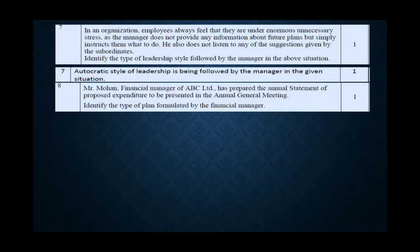Next: Mr. Mohan, Financial Manager of ABC Limited, has prepared the annual statement of proposed expenditure to be presented in the annual general meeting. Identify the type of plan. When we read the last line first — 'identify the type of plan' — we immediately think of types of plans. Since a statement of income or expenditure is being made, our answer is budget. Budget is a type of plan involving a statement, which Mohan presented in the meeting.